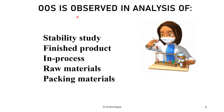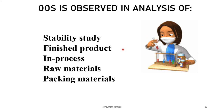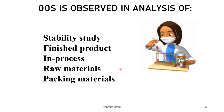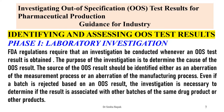Generally, OOS is observed and investigated during stability studies, finished product evaluation, in-process testing, raw material testing, and packaging materials testing. Once an OOS test result has been reported, it is necessary to both identify and assess the test result. Phase one — investigation in the laboratory — needs to be carried out.